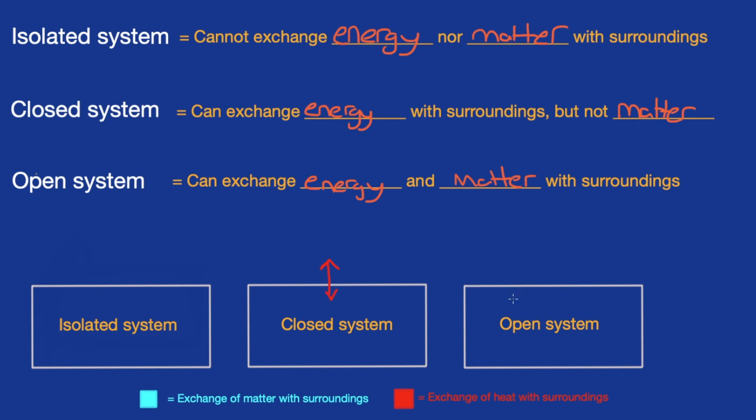For open systems, we're also going to get that exchange of the energy or the heat with the surroundings between the system. And we're also going to get exchange of matter, which is going to be visualized right here with the blue.